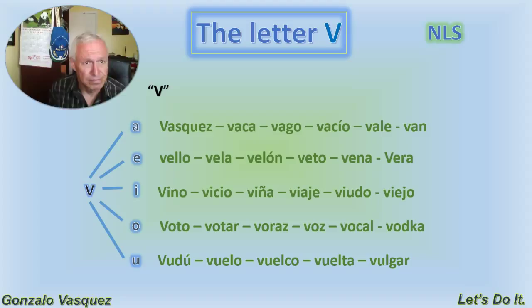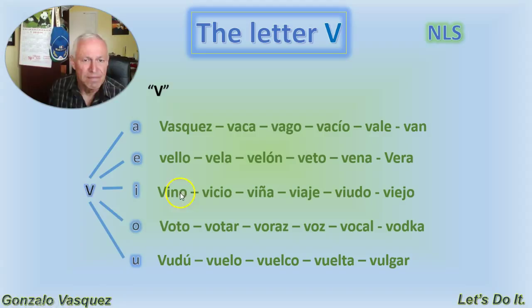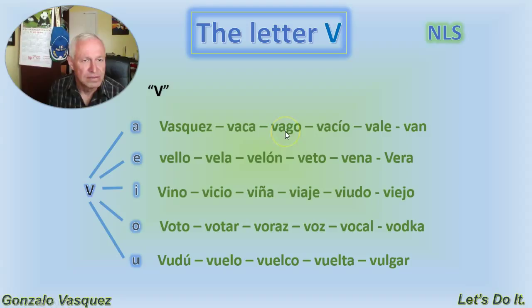You'll hear people making reference to it as V corta, or V. That's the name of the letter V, and the sound is V — same thing in English. So, la V con la A will be Va, like Vázquez, that's my last name. Vaca is a cow.